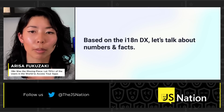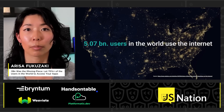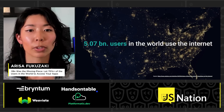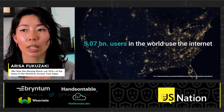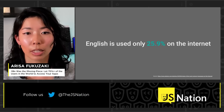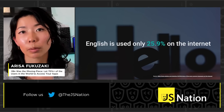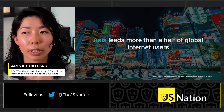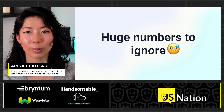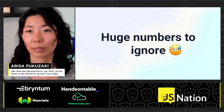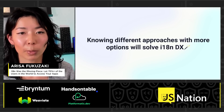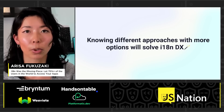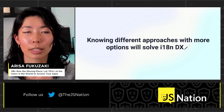Let's talk about the numbers and facts. Starting from the whole number of users in the world, it's 5.07 billion users on the internet. Surprisingly, English is used only 25.9% on the internet, and Asia leads more than half of global internet users. All these numbers are huge, and we cannot simply ignore these massive numbers. Knowing different approaches with more options will actually solve your current i18n DX.